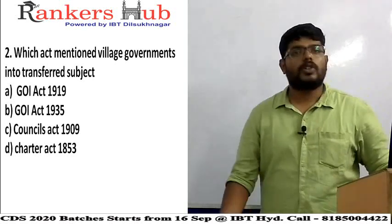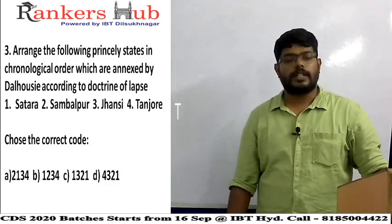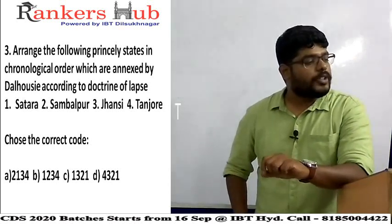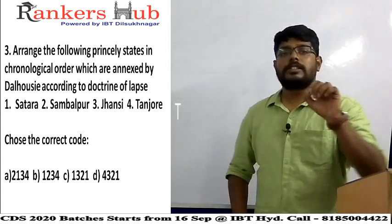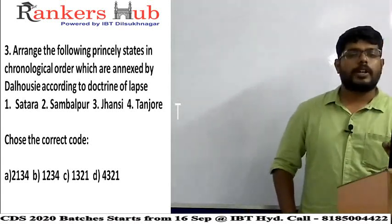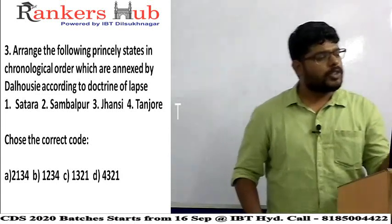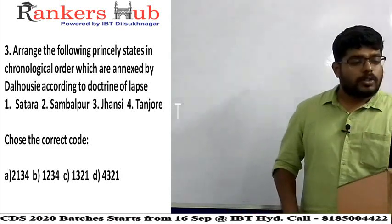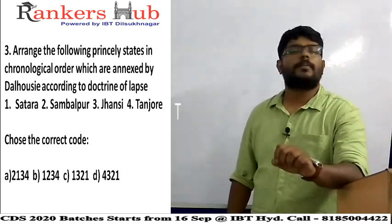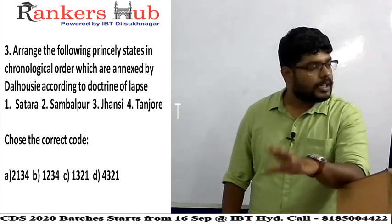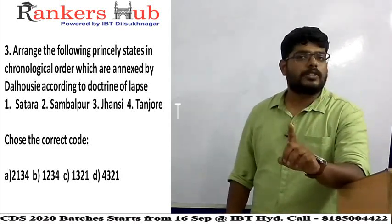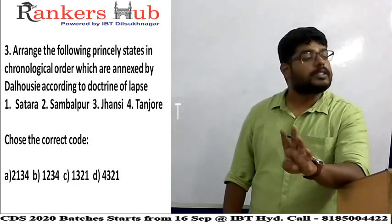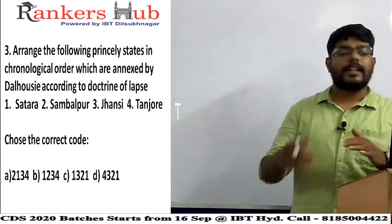Question three: Arrange the following princely states in chronological order which were annexed by Dalhousie according to the Doctrine of Lapse. This part is very important for serious examinations because the Doctrine of Lapse played a major role in the 1857 revolt. The options are: 1) Satara, 2) Sambalpur, 3) Jhansi, 4) Thanjavur.